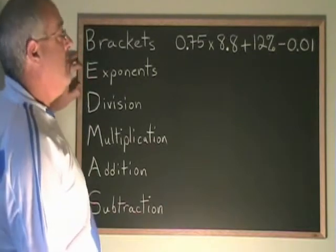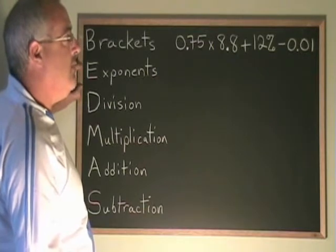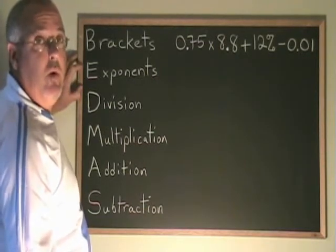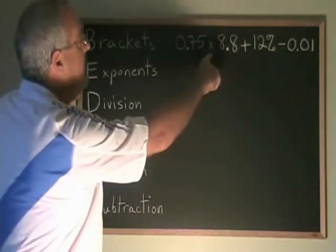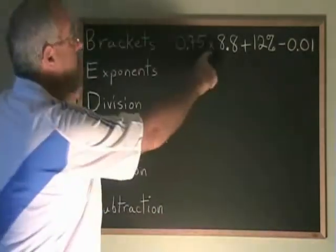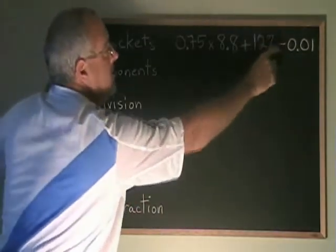In this example, we have 0.75 times 8.8 plus 12 percent minus 0.01. The order of operations will have me do this multiplication first because multiplication happens earlier in BEDMAS than addition or subtraction.